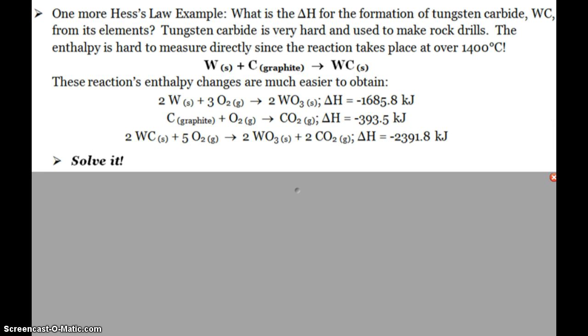Take a moment and see if you can figure out this one. Again, this is a reaction, tungsten reaction with carbon graphite to form tungsten carbide. This reaction takes place over 1400 degrees Celsius, so not very easy to measure directly. But these three enthalpy changes are much easier to get. So pause the video and see if you can figure out the answer to this.